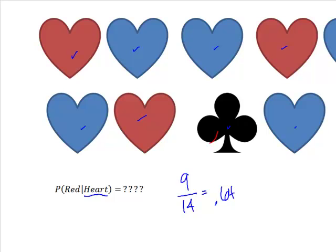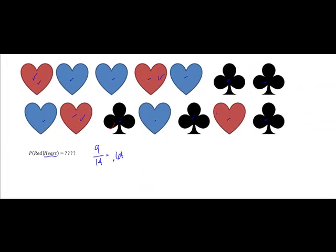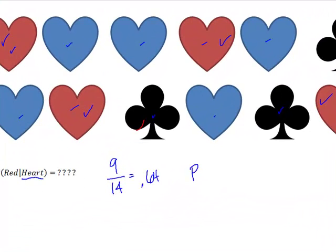Well what if I wanted to know the probability that I drew something red? Well there are one, two, three, four red items. So the probability of red is simply going to be four over fourteen, which is roughly twenty-eight percent.